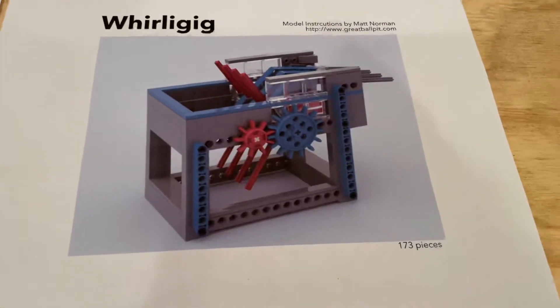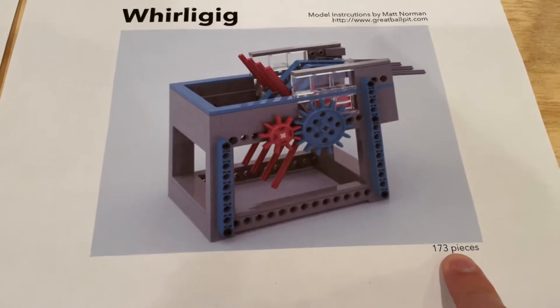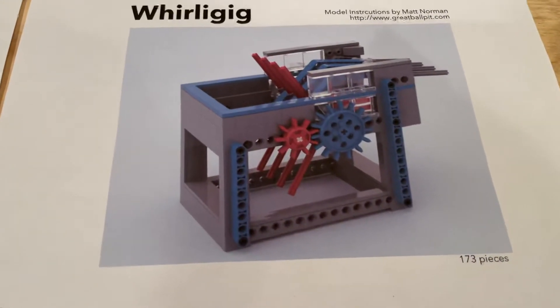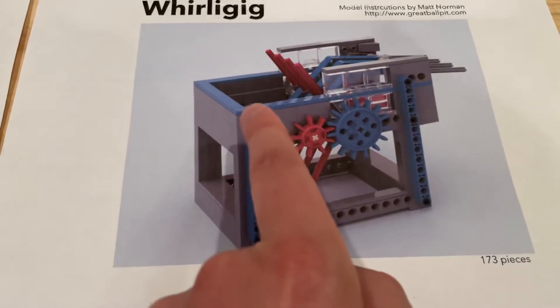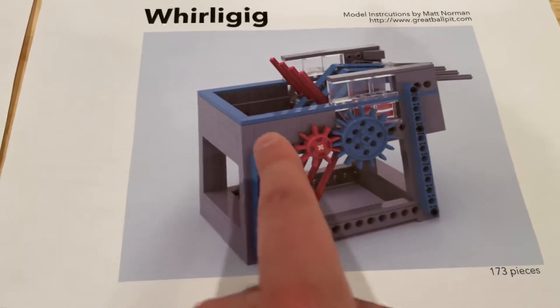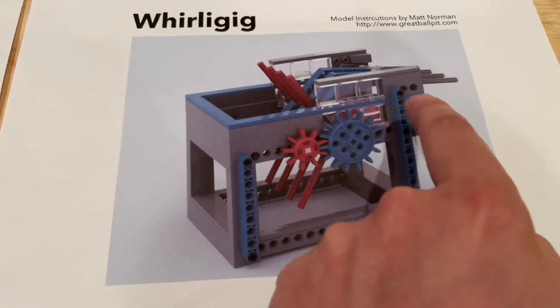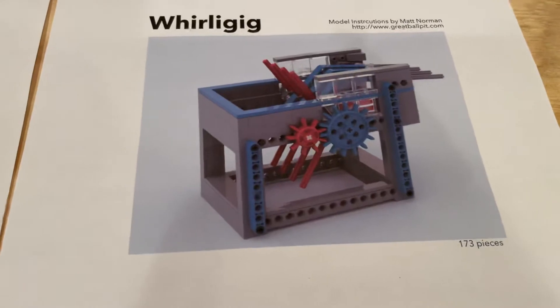Next up, we've got the Whirly Gig. Again, another relatively small part count on this one. And I just really like the idea behind this one with the prong pieces here going around, pushing the balls from the lower level up to the upper part here. Really cool idea.